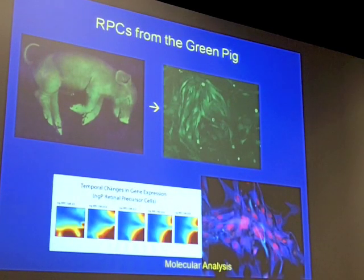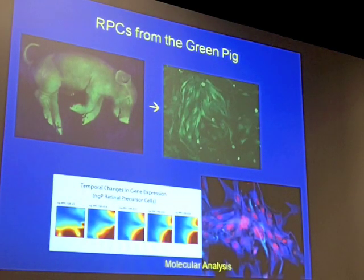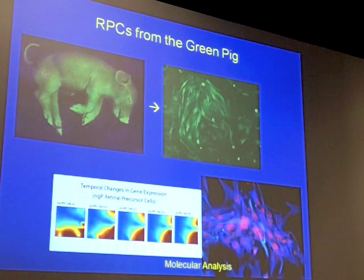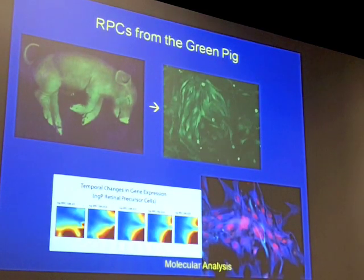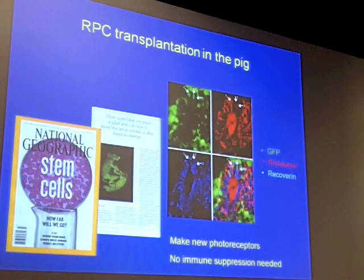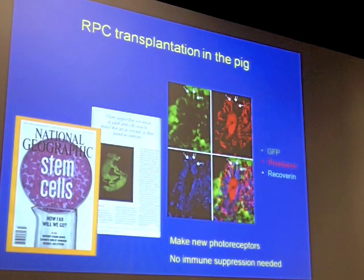Based on the idea that we can repopulate photoreceptors and achieve a visual improvement in the recipient, we moved up to a pig model. It turns out there is a transgenic pig with the green jellyfish gene, so we were able to get green pig cells and subject them to the same kinds of analysis. We can transplant these to the retina, and again we saw photoreceptor cells — here we're showing different photoreceptor-specific proteins that these cells are making after transplantation.